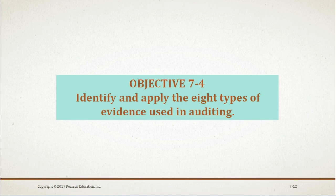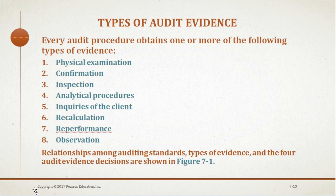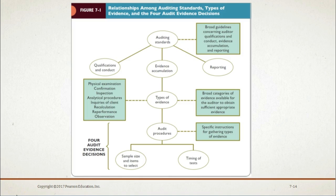In deciding which audit procedures to use, the auditor can choose from eight types of evidence. We will now discuss the eight types of evidence used in auditing. Every audit procedure obtains one or more of the following types of evidence: physical examination, confirmation, inspection, analytical procedures, inquiries of the client, recalculation, re-performance, and observation.